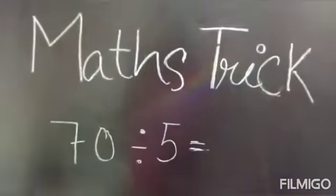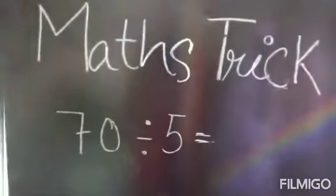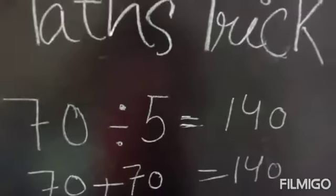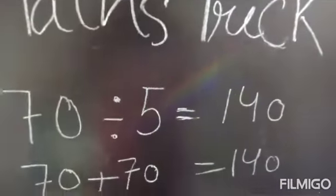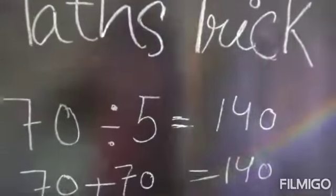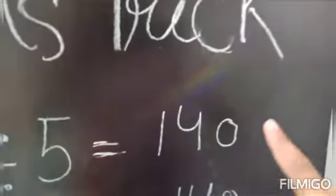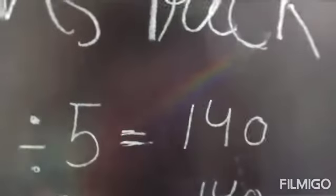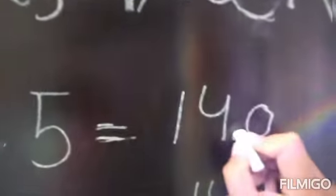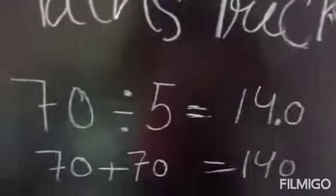First we will add 70 plus 70 equals 140. Friends, we are dividing by 5. It is a one digit number. So we will leave one digit here. We will leave 0 and put a decimal between 4 and 0. So this is the answer.